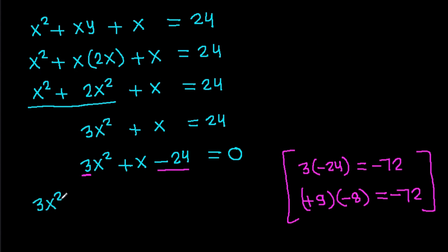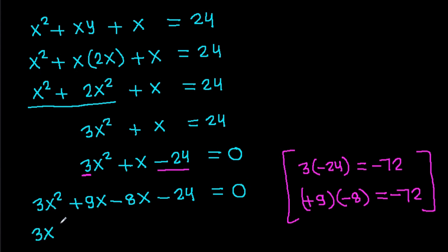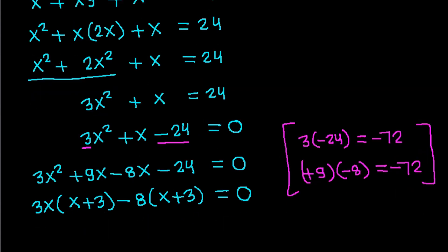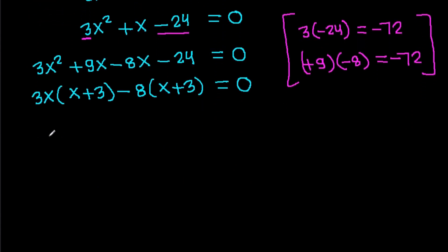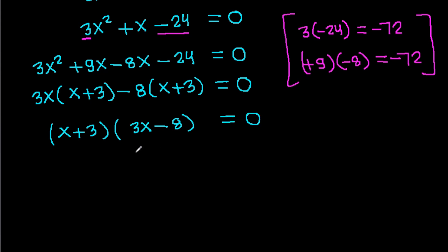So we split the middle term: 3x squared plus 9x minus 8x minus 24 equals 0. Here we can take 3x common to get 3x times (x plus 3), and take minus 8 common to get minus 8 times (x plus 3), equal to zero. So we can take (x plus 3) common, giving (x plus 3)(3x minus 8) equals 0.